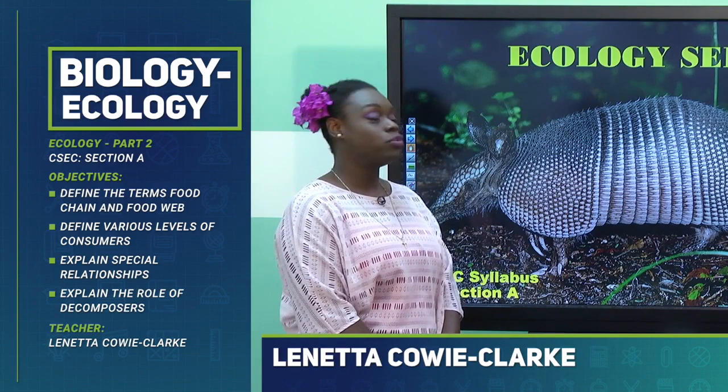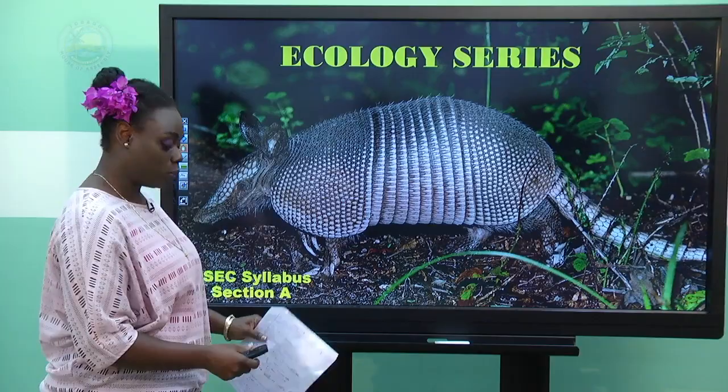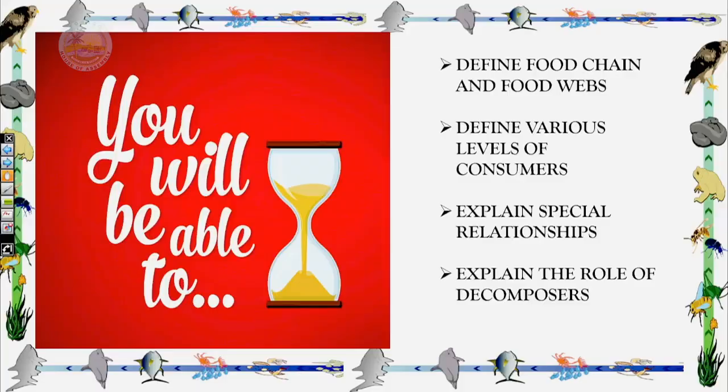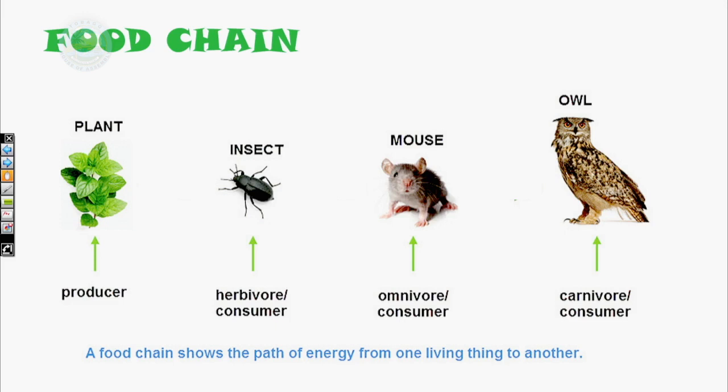Hi and welcome back to part two of the ecology series in biology, brought to you by the Division of Education, Innovation and Energy e-learning program. Today you will be able to define food chains and food webs, define various levels of consumers, explain special relationships, and explain the role of decomposers.